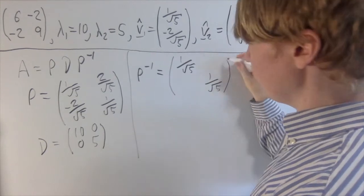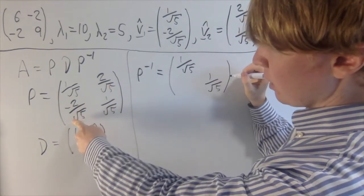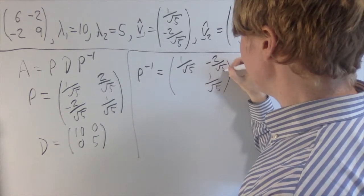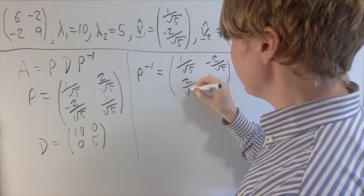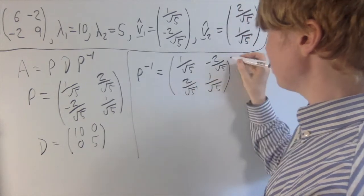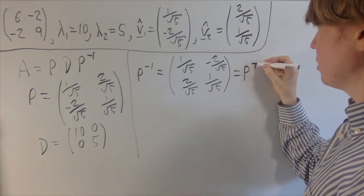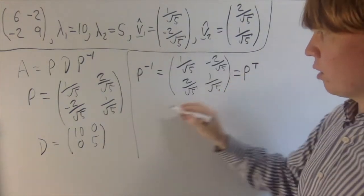And then finally, we make this negative and take the negative of this, so you get minus 2 over root 5, 2 over root 5 here. So very little changes here, and you may have noticed this is actually equal to P transpose. So this will turn out to be important later on.